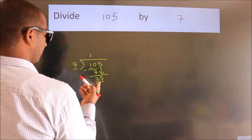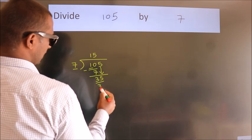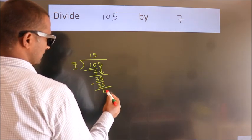When do we get 35? In 7 table. 7 fives, 35. Now, we subtract. We get 0.